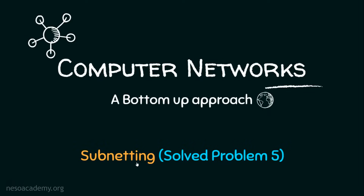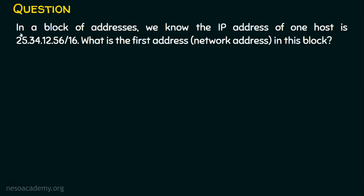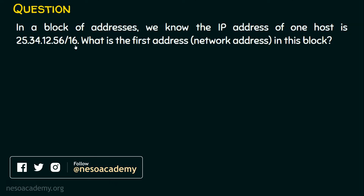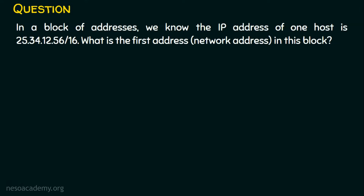Subnetting. Let's solve another problem in subnetting. The question is: in a block of addresses, we know the IP address of one host is 25.34.12.56 and the subnet mask is slash 16. What is the first address — that is, the network address — in this block? We are given an IP address and a subnet mask and we need to find the first address in the subnet. We have many ways to solve this question.